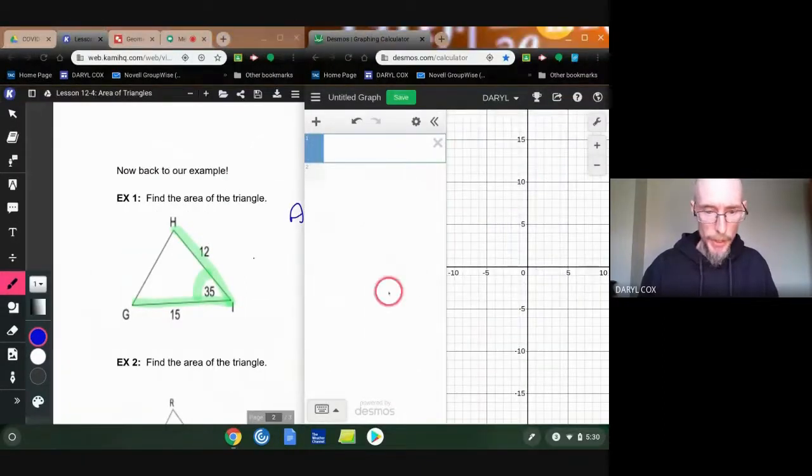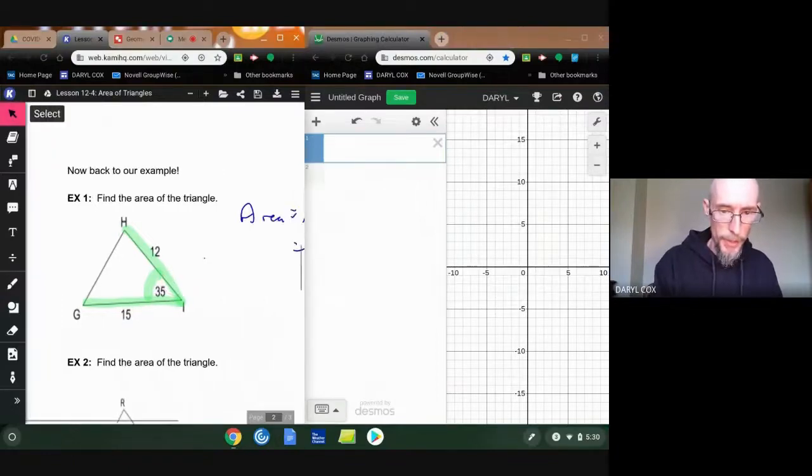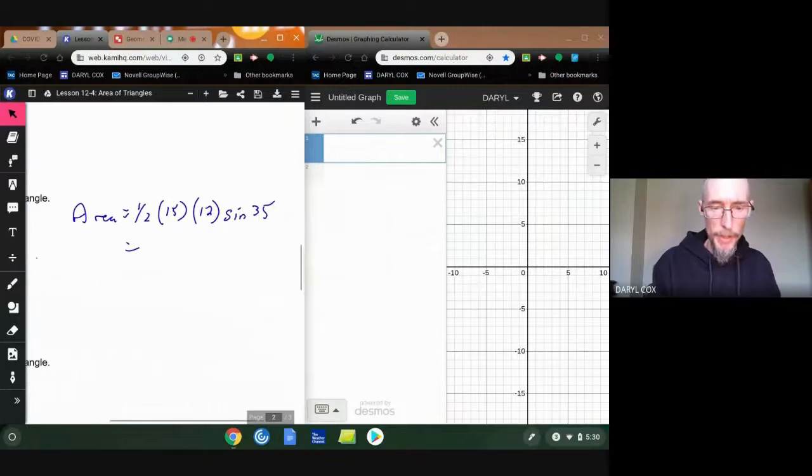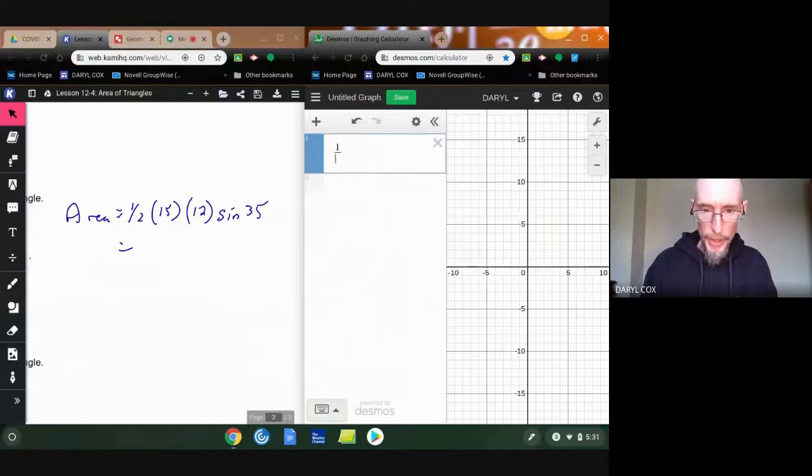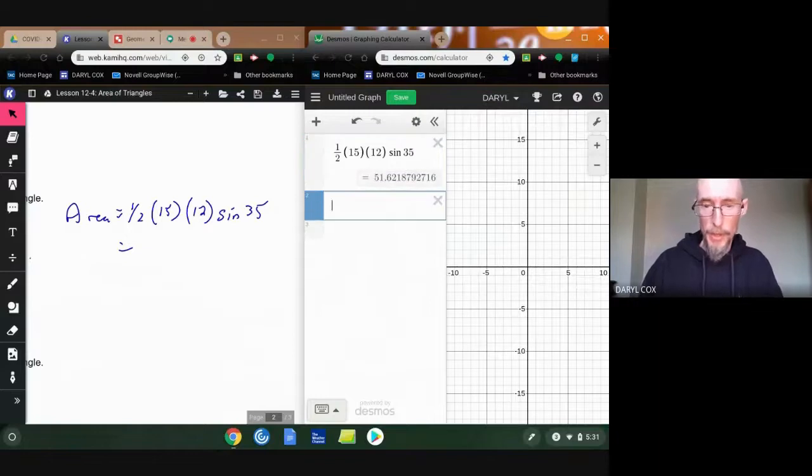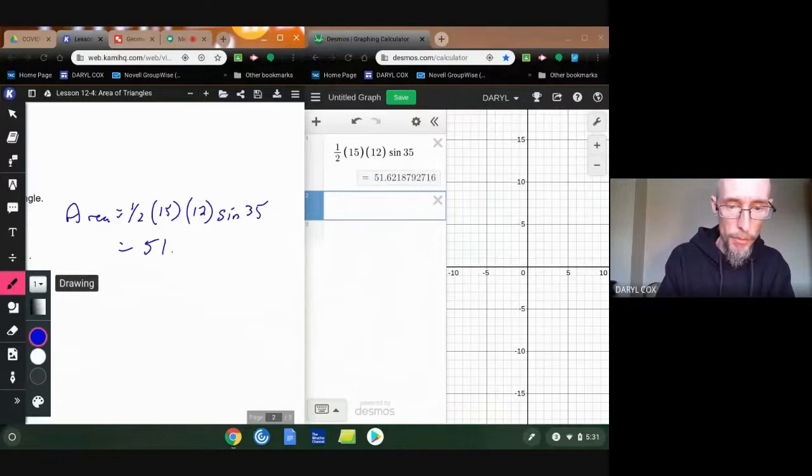So let's see, I want to get, let's see, my information was here. So I need one half times 15 times, I can actually just enter that all into here. One half. Love that. That's nice. Times 15 times 12, that's the two sides, times sine of the angle between them. And there we go. The area is nothing more than 51.6219. There's my area of the triangle.